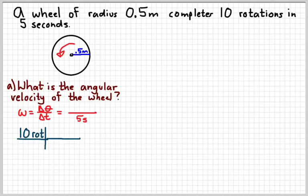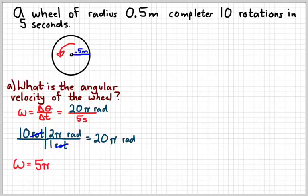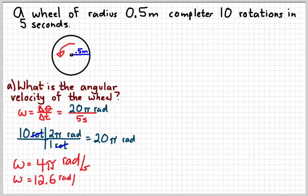So, it's important to remember that one rotation is 2 pi radians. And then that gives me 20 pi radians because the rotations will cancel out. So, remember those dimensional analysis tricks to convert from one unit to the other. And so, 20 pi radians over 5 seconds, 20 divided by 5 is 4. So, that would be 4 pi radians per second. And if you want to multiply the 4 pi and get 12.6 or something like that, you can.